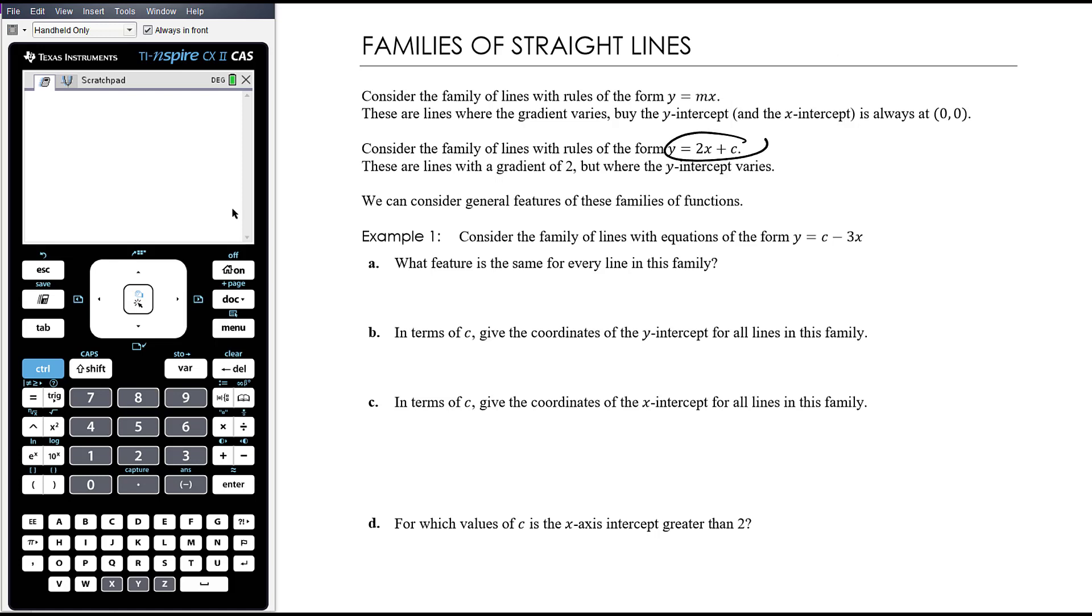We could have another family of straight lines with an equation of this form. So they all have a gradient of 2, but they have different y-intercepts. So there's y equals 2x plus 0, y equals 2x plus 1, y equals 2x plus 2, 2x plus 3, 2x minus 1, etc. So that's the sort of thing we're talking about. A group of lines that have something in common, but equally something that can vary.